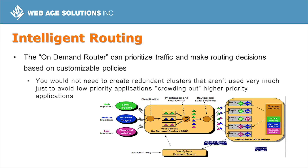The intelligent routing feature is implemented by a new runtime component called the on-demand router. This component sits directly in front of the WebSphere servers hosting the applications and prioritizes traffic based on customizable policies. This ensures that requests from lower-priority applications don't prevent requests from higher-priority applications from meeting their performance goals.